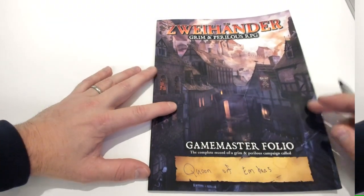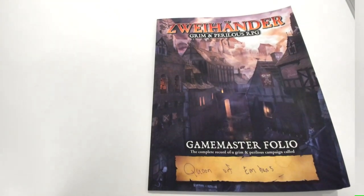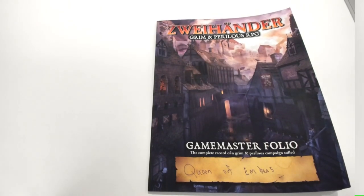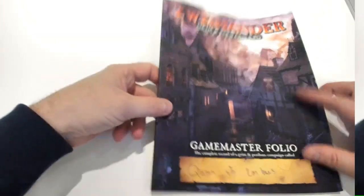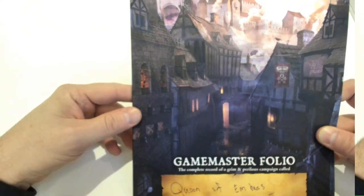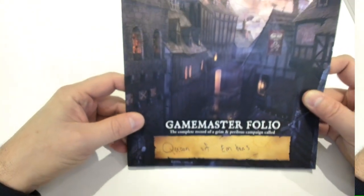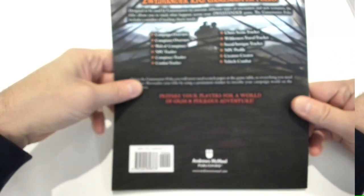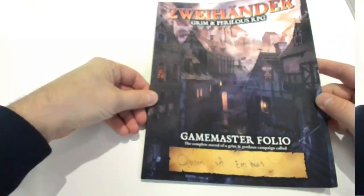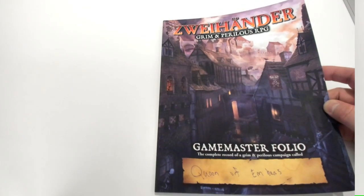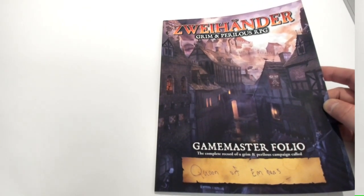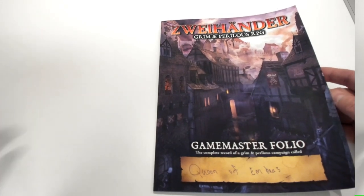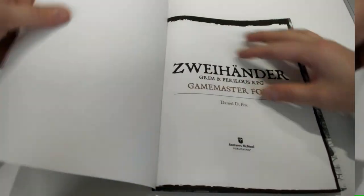One thing that's really cool about this folio is that much like our other materials in the Zweihander line, it's soft touch - it feels soft just like the covers of our books, both on the front and on the back. It is soft cover, but we did that with intention because we wanted to make it inexpensive for Game Masters to pick up, but we also wanted to ensure that it was able to be opened easily.